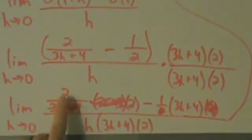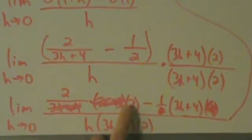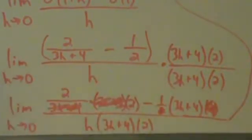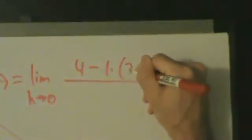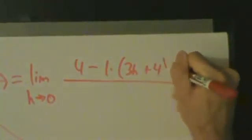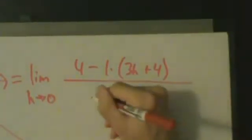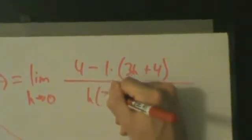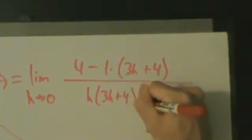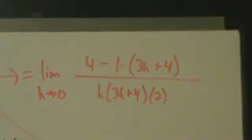Here's 2 times 2. So that's 4. And then we have minus the quantity (3h+4). So we have 4 - 1·(3h+4). And then on the bottom, we still have h·(3h+4)·2. Alright.